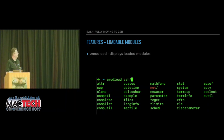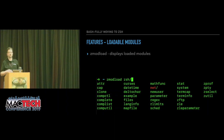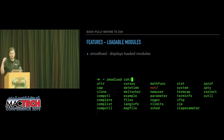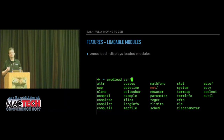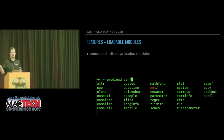A lot of the components of Z shell are built in as modules to keep down on memory load. Each module can be linked and loaded using the `zmodload` command. You can discover what modules are available by typing `zmodload zsh/` and then hitting tab — that will use autocomplete to show you all the different modules available.